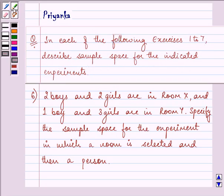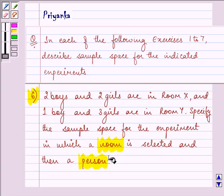Now here the experiment which is given to us is two boys and two girls are in room X and one boy and three girls are in room Y. Specify the sample space for the experiment in which a room is selected and then a person.